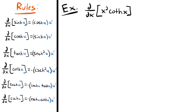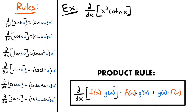Next, we have the derivative of x squared times hyperbolic cotangent of x. The derivative rule for hyperbolic cotangent is: the derivative of hyperbolic cotangent of u equals negative hyperbolic cosecant squared of u times u prime. Since our function is a product of two functions, similar to a previous example, we need to use the product rule for derivatives.